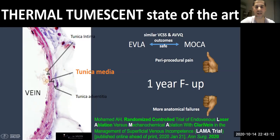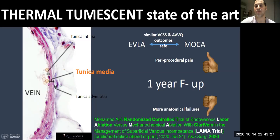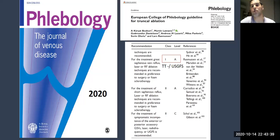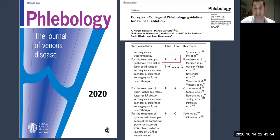The LAMA trial comparing endovenous laser ablation with mechanochemical ablation for venous insufficiency found similar venous clinical severity scores. Both presented similar periprocedural pain, but MOCA showed more anatomical failures at one year. According to the European College of Phlebology guidelines by Korsut and Boskurt, laser or radiofrequency ablation is recommended in preference to surgery or foam sclerotherapy for great saphenous vein reflux, with a 1A recommendation.